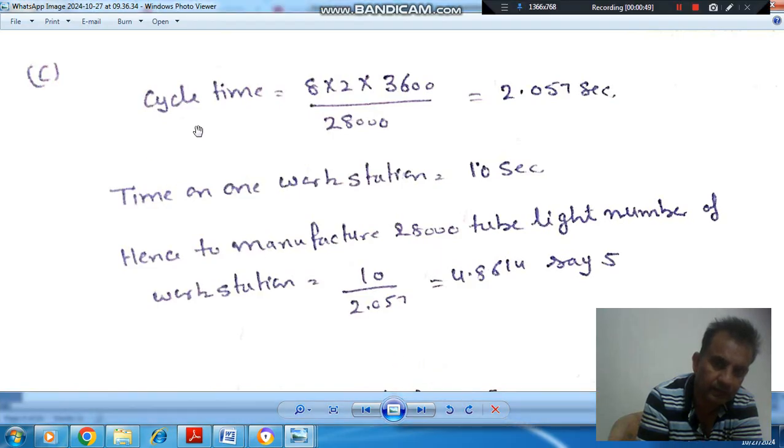So first of all, we calculate the cycle time. Total time is, as there are two shifts of eight hours, so in seconds it will be 8 times 3600. And number of tube lights is 28,000. So cycle time is total time divided by number of tube lights. That is 2.057 seconds.